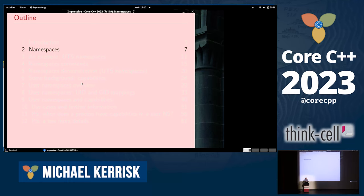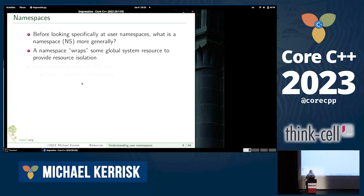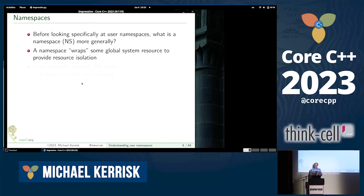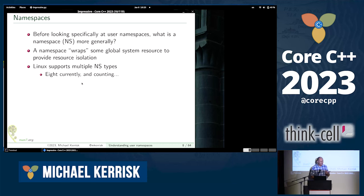Before looking specifically at user namespaces, I want to look at the concept of namespaces generally. It's hard to nail down some sort of concise definition of namespaces, but this is my poor attempt: a namespace wraps some global resource to provide isolation of that resource. There are a number of different namespace types.